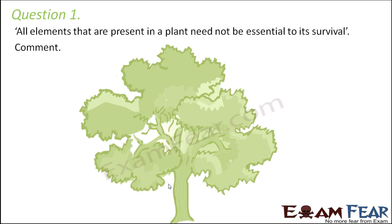Question number 1: All elements that are present in a plant need not be essential to its survival. Comment. Well, this statement is absolutely true. A plant might have a lot of minerals in itself, but not all of them are required. That is why I differentiated mineral elements into two types: essential and non-essential. Essential are those which are extremely necessary. Non-essential are those which are present in small amounts — if they are present, it's fine; even if they are not present, it's fine.